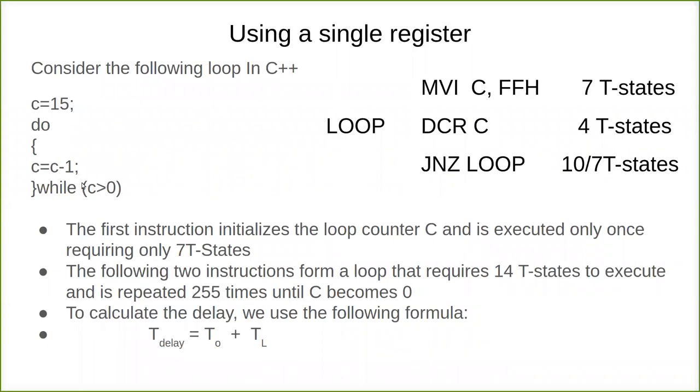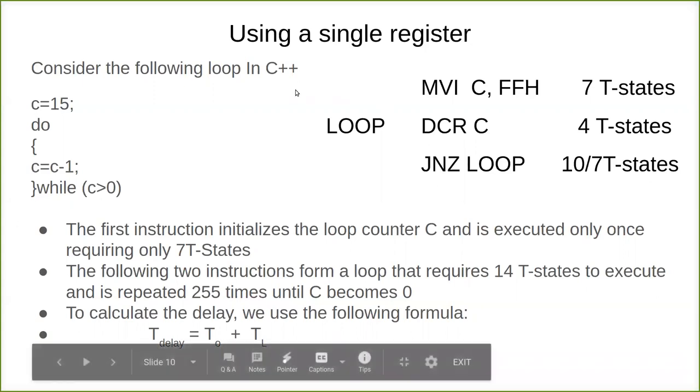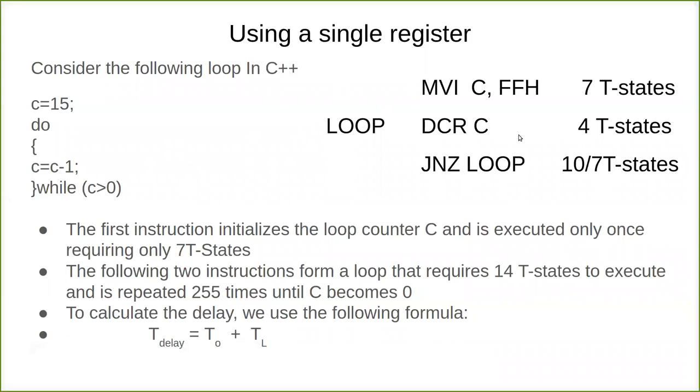Now we check whether C is greater than zero. Since C is 14, it is greater than zero, so it goes inside and keeps decrementing the counter. When it becomes zero, the loop ends and the sentence next to this while statement gets executed. This is similar to what we've seen in other languages.